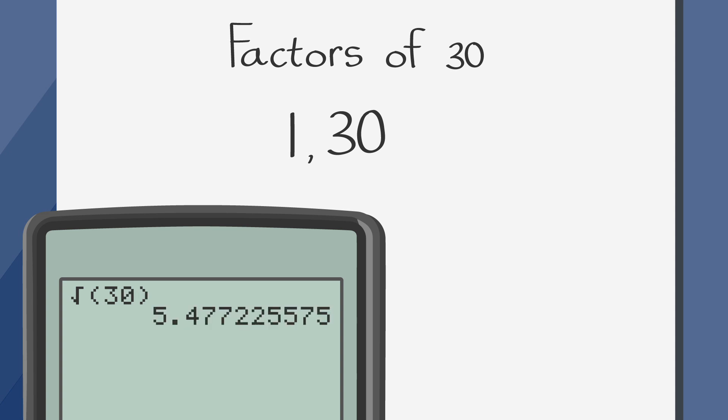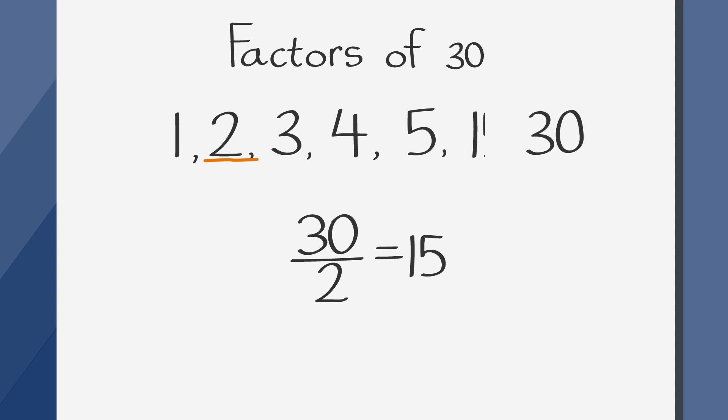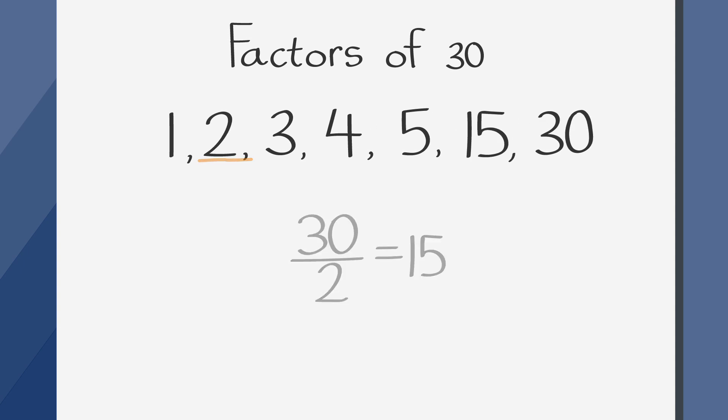We find it is about 5.47, so we'll consider all of the integers between 2 and 5.47. These are 2, 3, 4, and 5, and we can add them to our existing list of 1 and 30. So now we ask if 30 is divisible by 2, which it is, since it equals 15. So we add 15 to our list of factors as well.